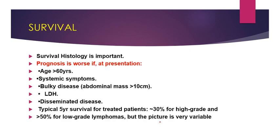For survival, histology is important in determining prognosis. Prognosis is worst if, at the time of presentation, age is more than 60 years, systemic symptoms are present, bulky disease exists, or lactate dehydrogenase is raised. The typical five-year survival for treated patients is more than 30 percent for high grade lymphoma and more than 50 percent for low grade lymphomas.